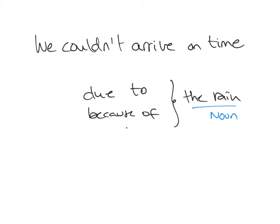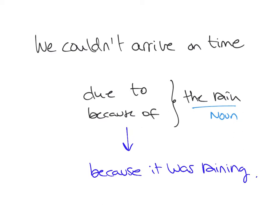If you wanted to use a full sentence, you could say 'we couldn't arrive on time because it was raining,' and then you would have a subject and a verb. So if you're going to use subject and verb, you would use something like 'because' or some other alternatives.